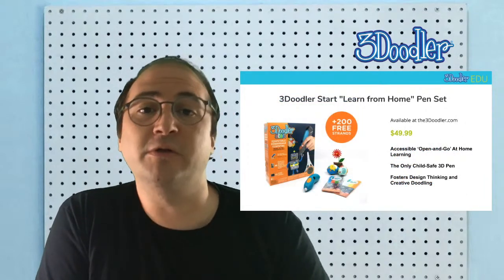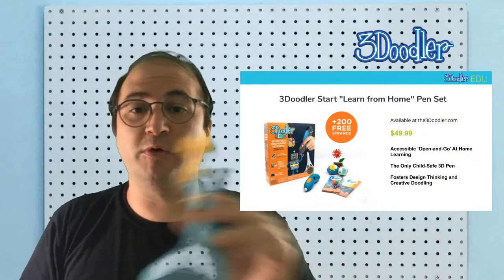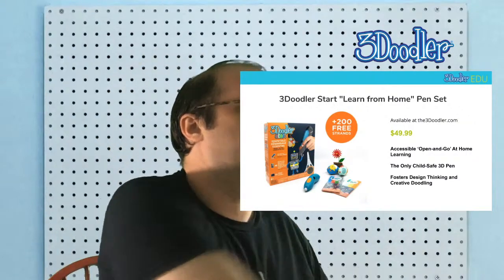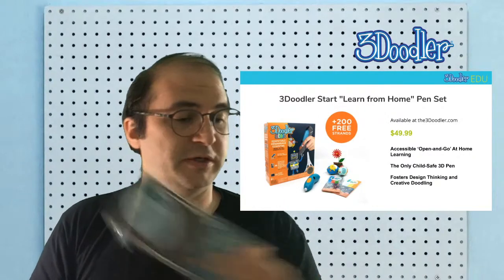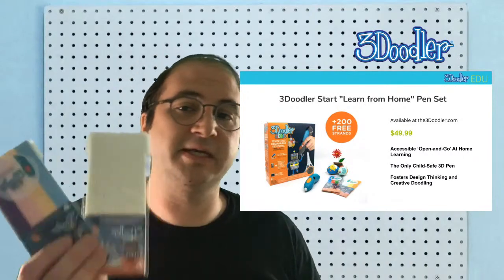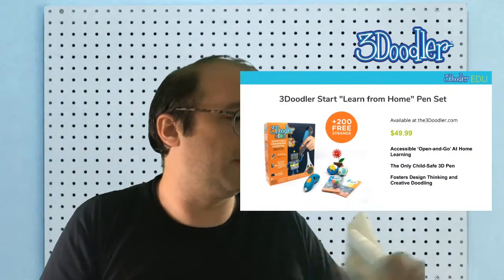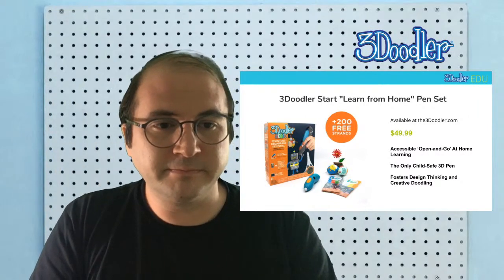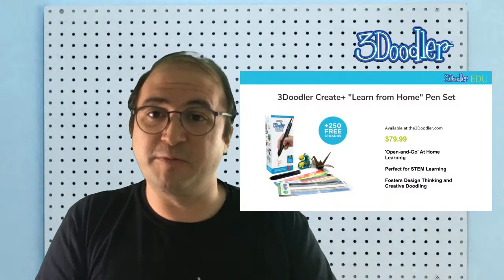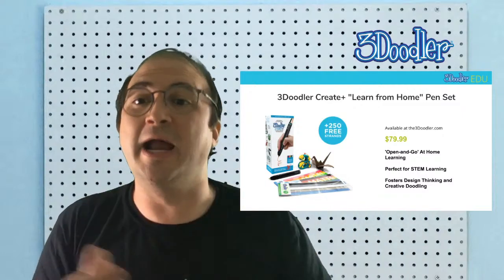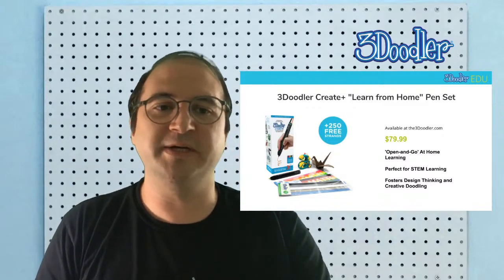As always, the 3Doodler Start Learn from Home pen set is currently available, which is $49. That's for a 6 plus audience, whereas this is more for a 4 plus audience. So it's for a younger audience, the Build and Play. That currently is available and it comes with 200 strands of material. It's quite nice. Do remember that the 3Doodler Start plastic is compatible with the Build and Play. So even like the glow in the dark plastic, for example. If you wanted to make a glow in the dark elephant, you can do that. And then as always, the 3Doodler Create Plus Learn from Home series is available. This is a reminder that this is a 14 plus item in the sense of it's hot. That one does get very hot, but you can make some pretty amazing things with it. It can do lots of different materials.